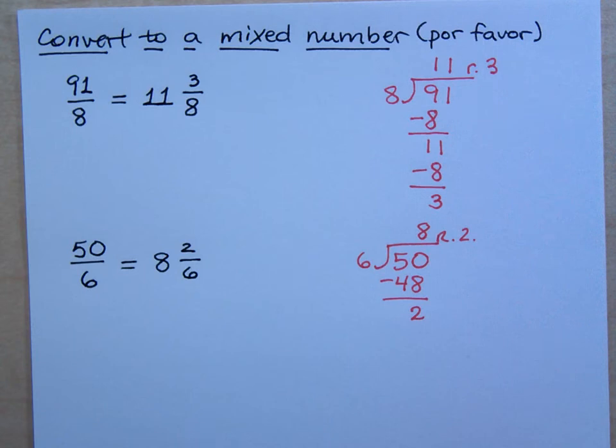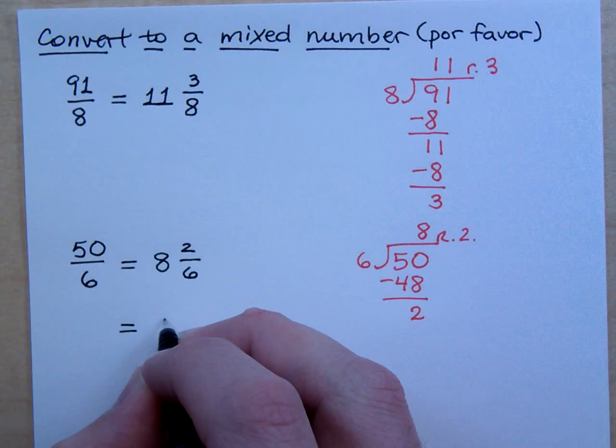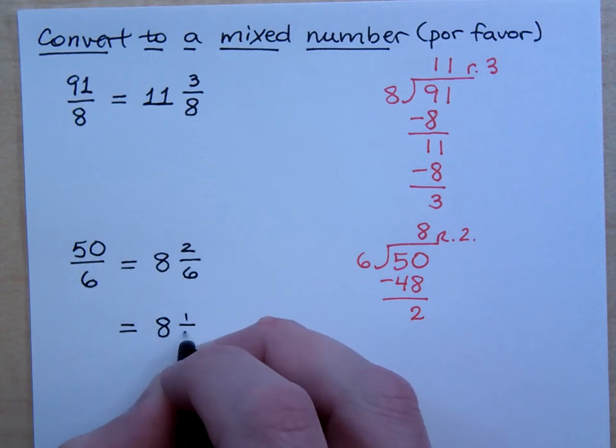Is this okay for me to have? I need to reduce this. I need to make sure it's in lowest terms. So 8 and 2 sixths reduces to what? 8 and 1 third. Do you all agree?